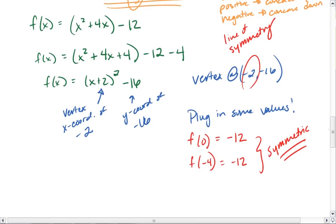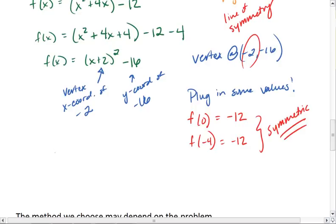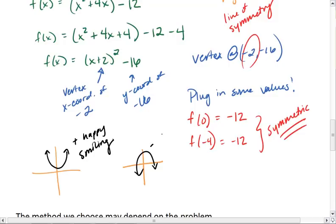The way you can think about this is that concave up is like a smiley face. So if we're positive, we're happy and smiling. Concave down looks like a frowny face. So the square term is negative, we're sad and frowning.